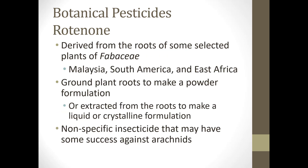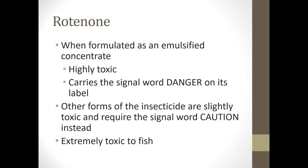Rotenone is a botanical pesticide derived from the roots of selected Fabaceae. It's found as a powder formulation from ground plant roots, or extracted to make liquid or crystalline formulations. It's a non-specific insecticide and may have some success against arachnids. When formulated as an emulsified concentrate it is highly toxic and carries the signal word 'danger.' Other forms carry the signal word 'caution,' but it is extremely toxic to fish, so it's really important to read your labels.